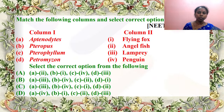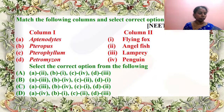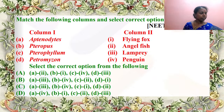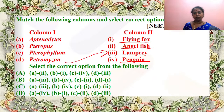Next match question: we have to select the answer with scientific names matched to common names. Aptenodytes is penguin; Pteropus is flying fox; Pterophyllum is angelfish; Petromyzon is lamprey. Answer is D — very correct answer by Tarunika, Arini, and score more.